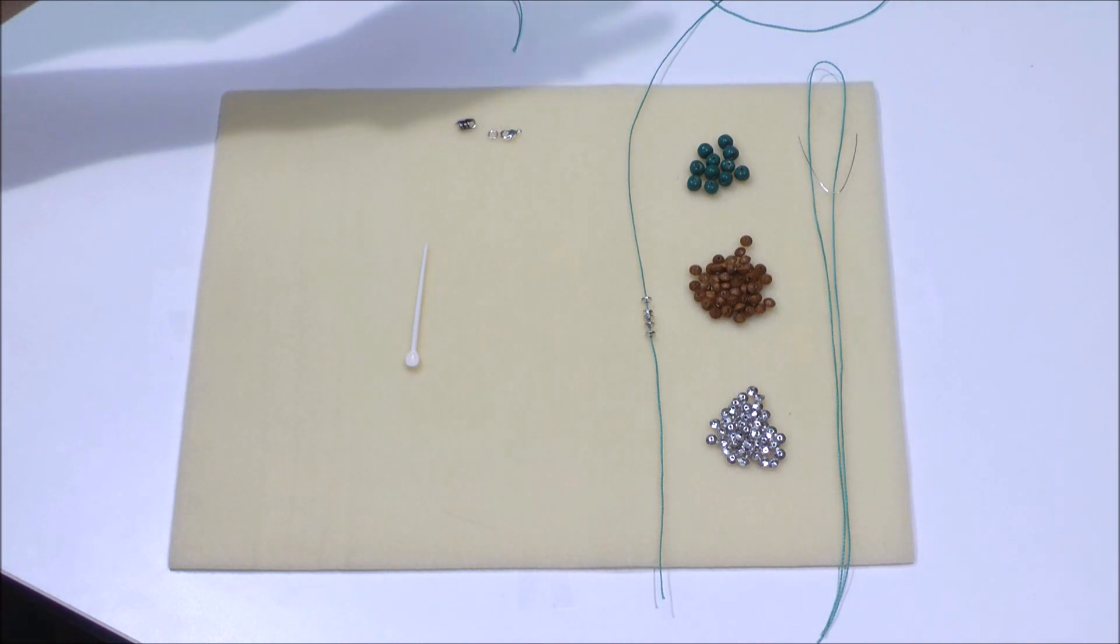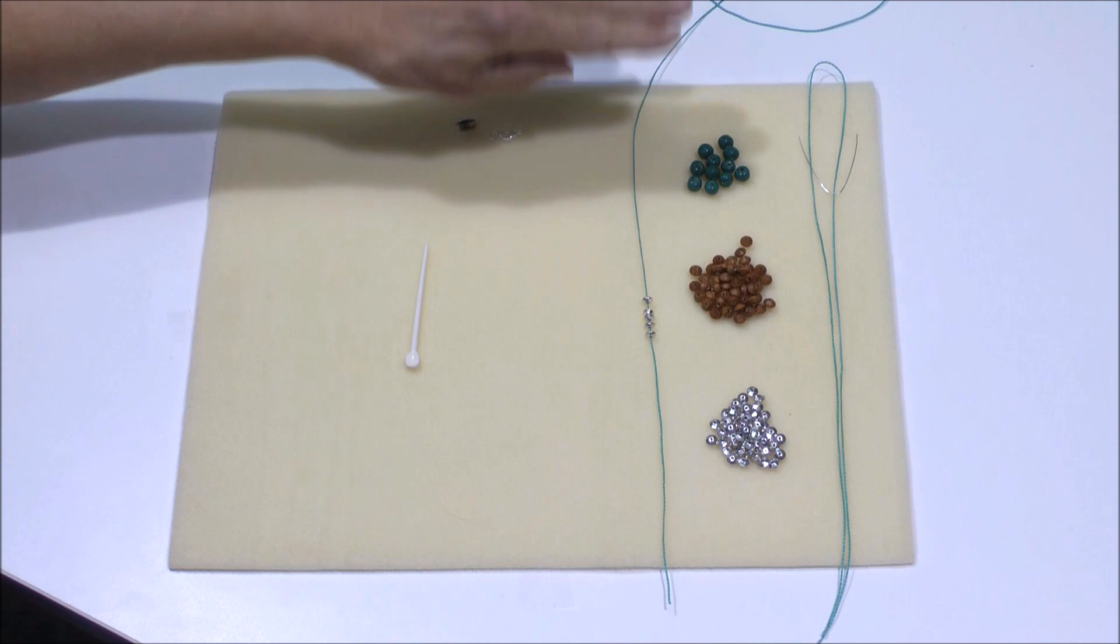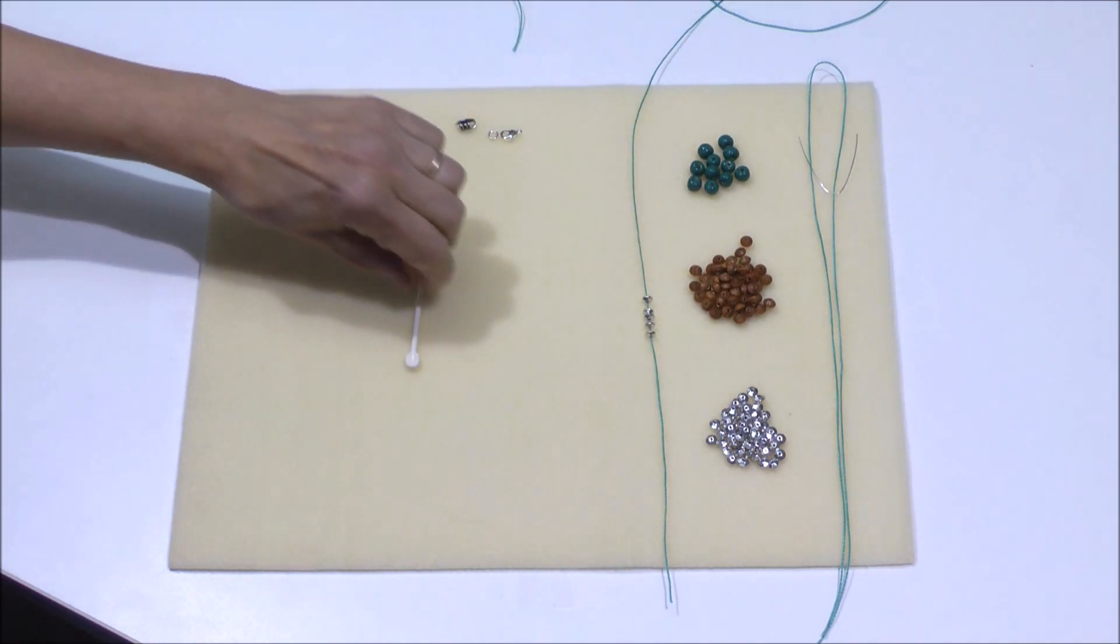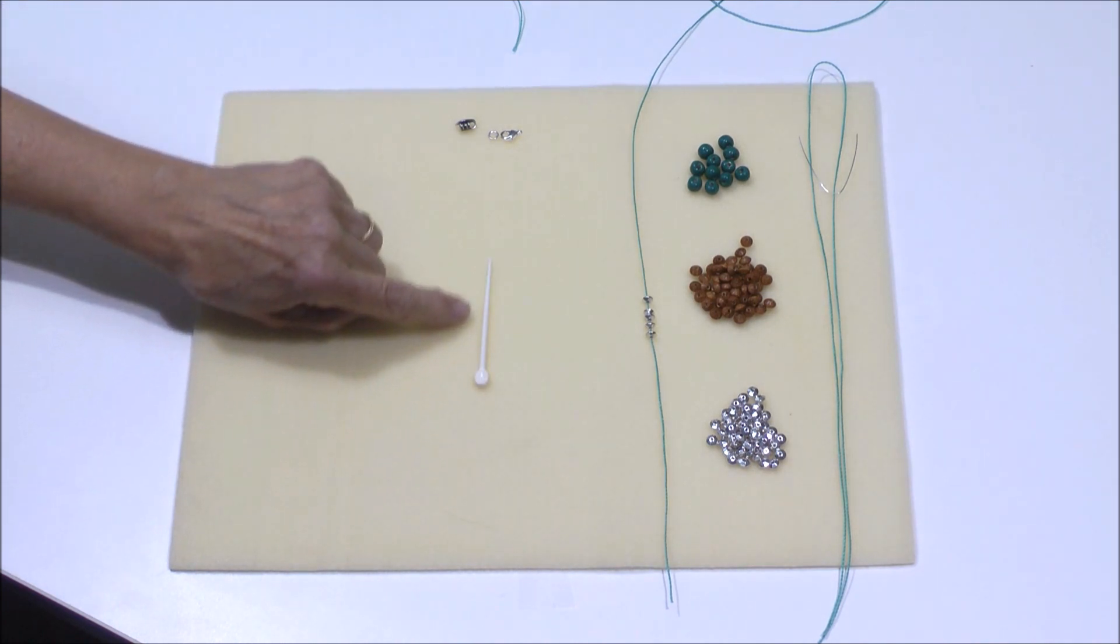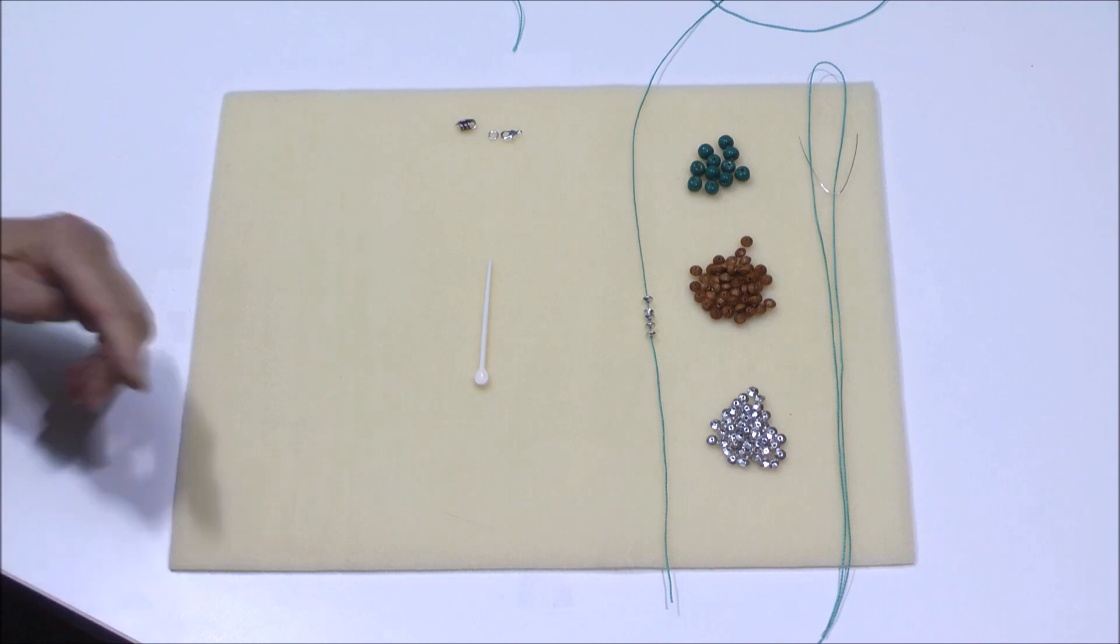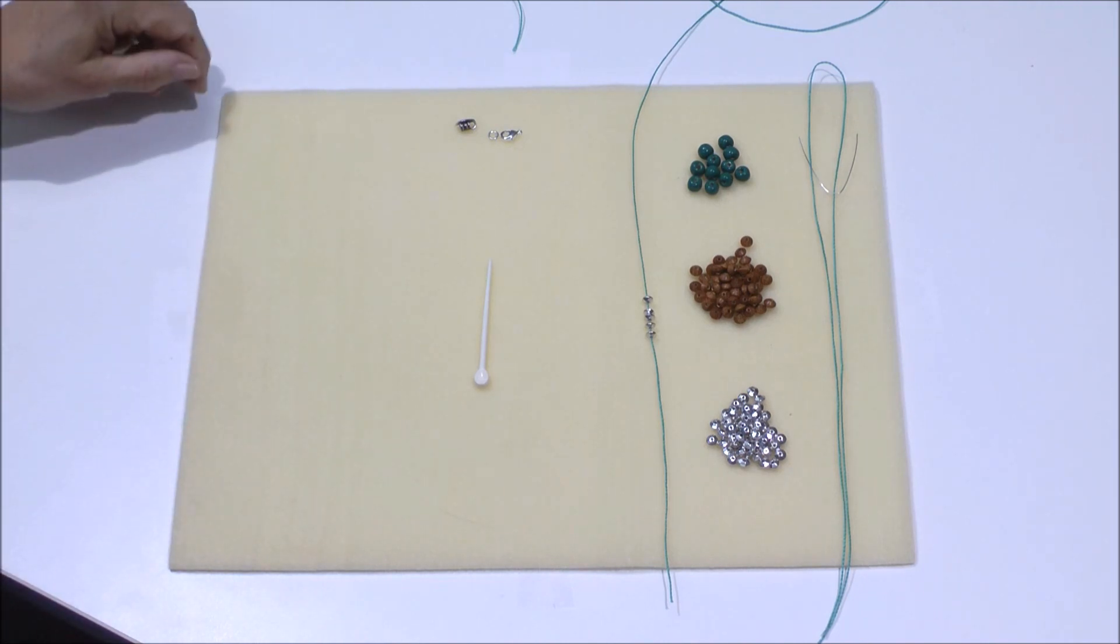I have here some cord, I have some different beads, and I have a clasp, a couple different endings, and I have a little pick from the knotty do-it-all kit that I'm going to use to help me place my knots. So let's get started.